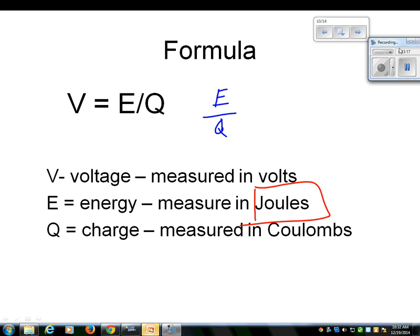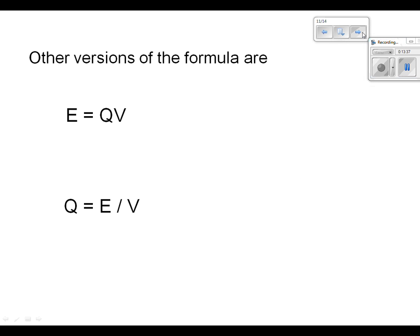So voltage is equal to energy over charge. Other versions of the formula are E equals Q times V. Please make sure that I got that right, because I had a little bit of an error the other day. That's Q times V, or Q equals E over V. Those are just the other versions of the formula. And again, I want to let you know, moving forward, grade 10, grade 11, especially grade 11 physics, when you come see me, all I'm going to be giving you is something like V equals E over Q, and you have to do the rearranging yourself.